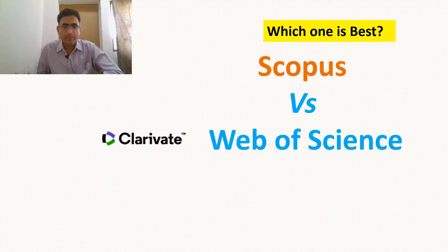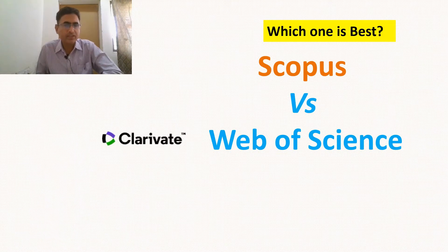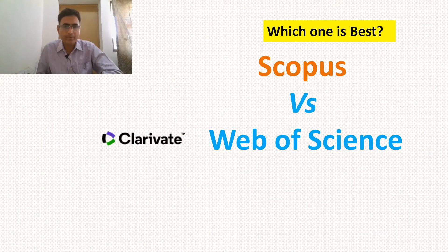Hello everyone, welcome. In this video today we will discuss which type of journal you should select for your publication so that your profile will stand out — whether you will go for Scopus indexed journals or Web of Science indexed journals, which one is the best. I will give you complete detail about both databases and at the end of the video I will give a comparative chart.